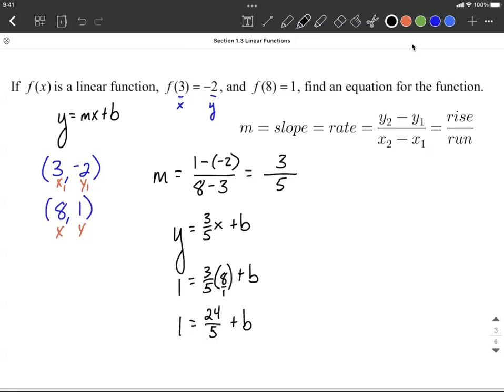Next, we want to move that fraction to the other side. So I'm going to go ahead and subtract 24 fifths from both sides. That will isolate the b and put that on the right-hand side by itself. But to combine this 1 and the 24 fifths, I would like to have a common denominator. I can rewrite 1 as 5 over 5 because 5 divided by 5 is equivalent to 1. And now that I have a common denominator, we're going to keep the common denominator and do the operations between the numerators. So 5 minus 24 makes negative 19 is going to be our value for b.